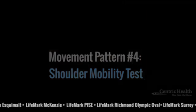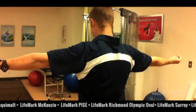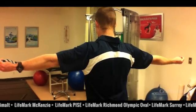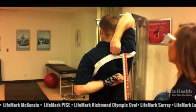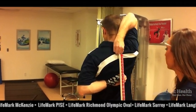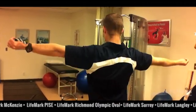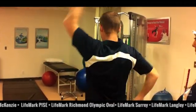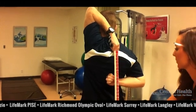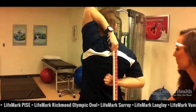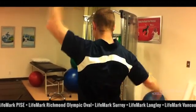Here you see me taking a measurement of David's hand length. His first movement, he's within his hand length. The second movement is much greater. This is an identification of an asymmetry.